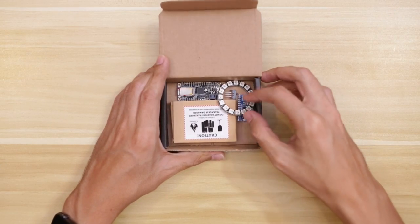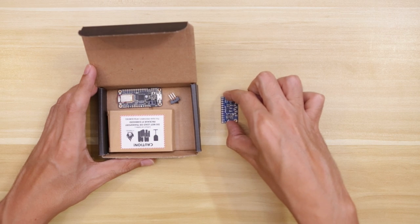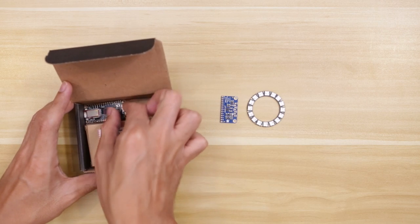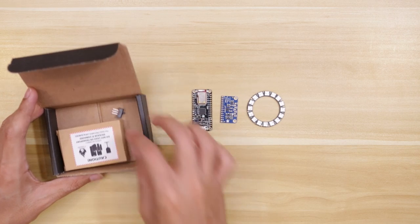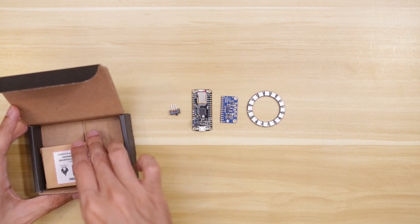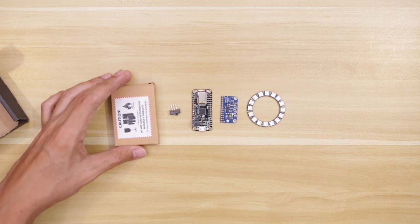To build this project, I used a 16 NeoPixel ring, an MPR121 capacitive touch sensor, an Adafruit Feather 32u4 Bluefruit LE, a slide switch, and a LiPo battery. You can get the full list of parts from my tutorial linked below.